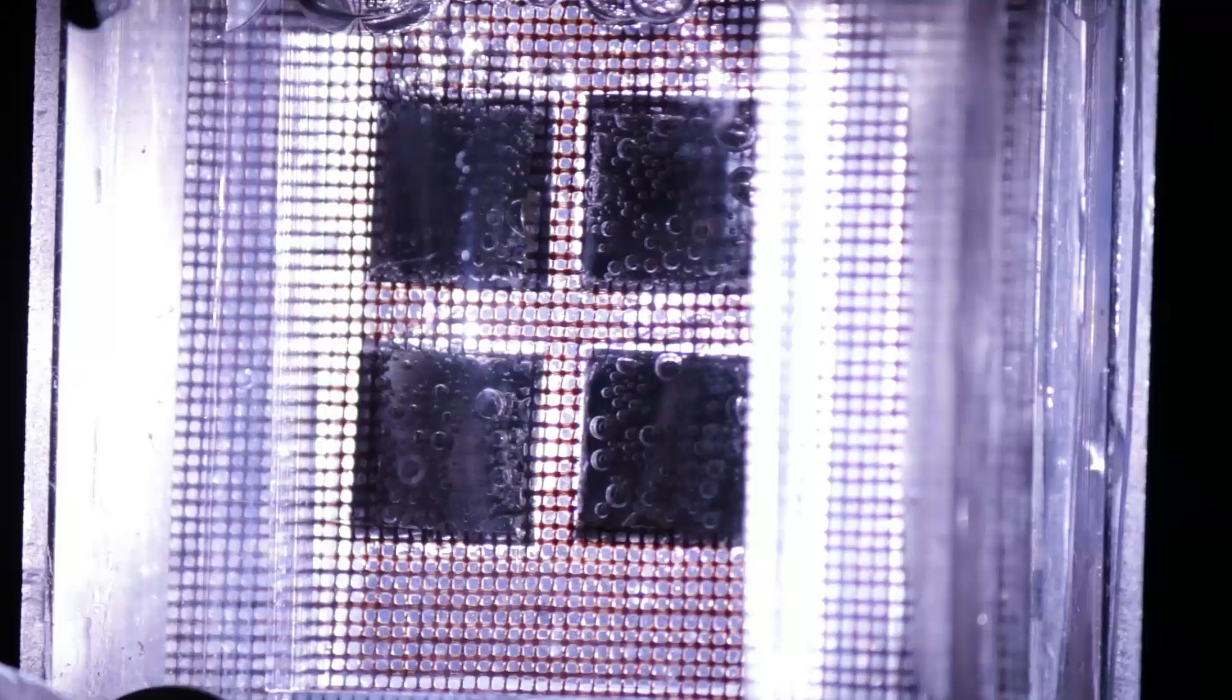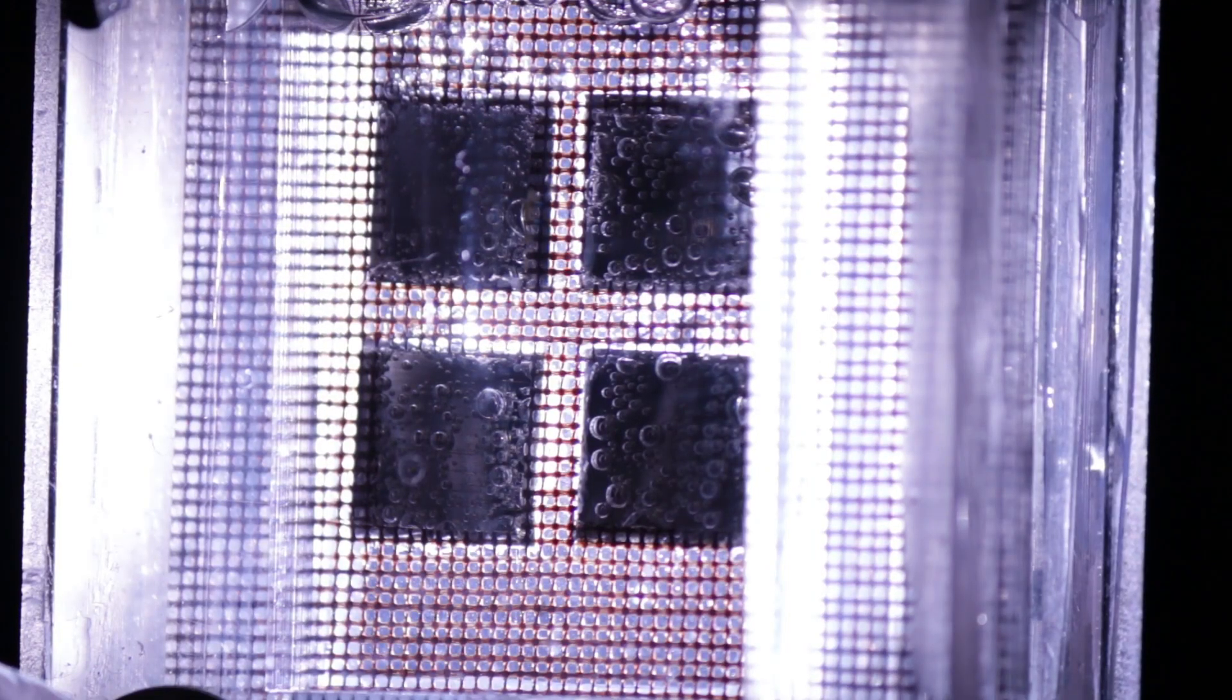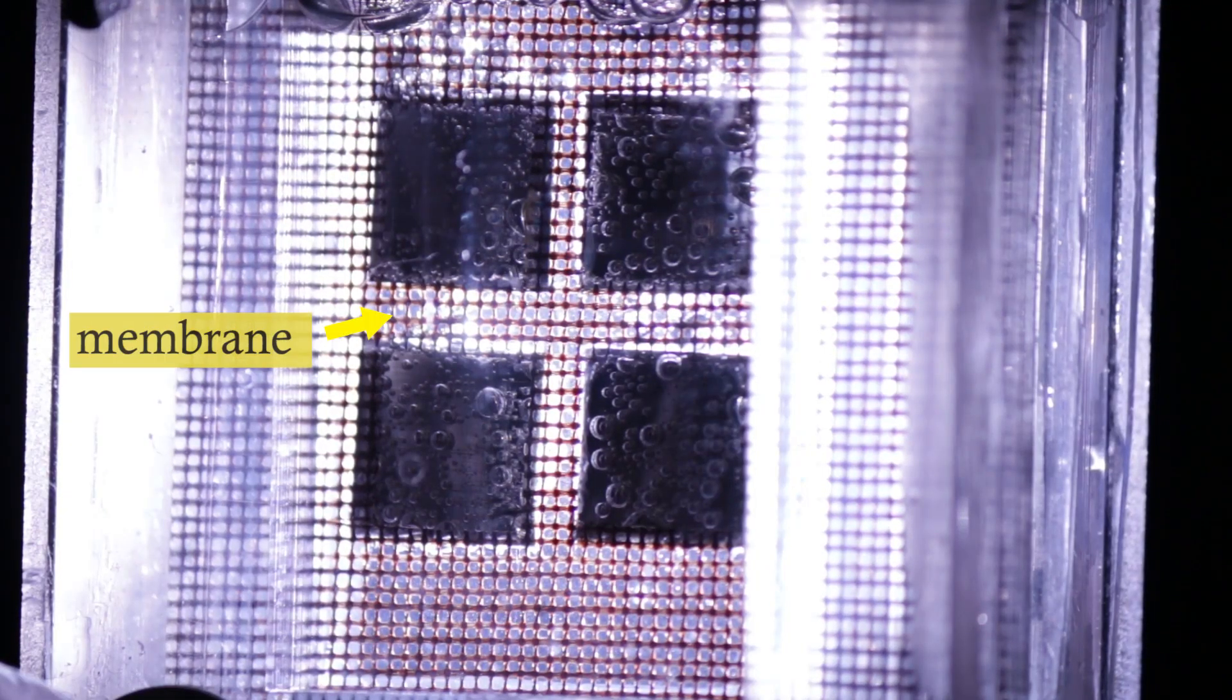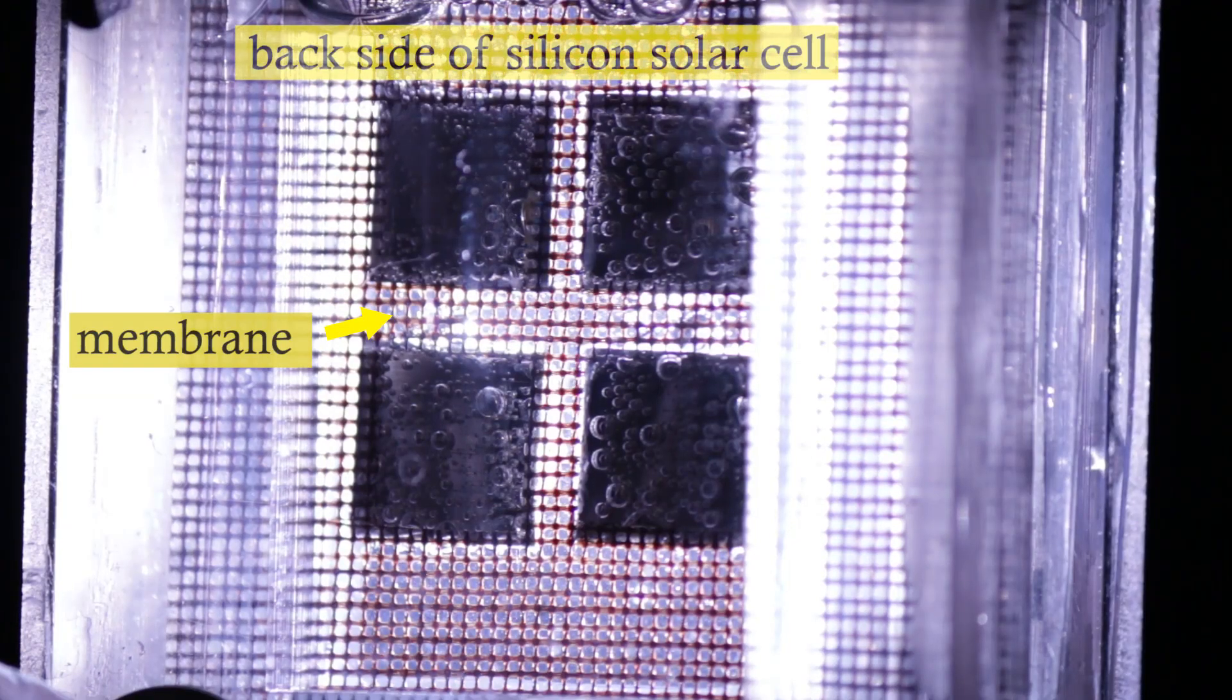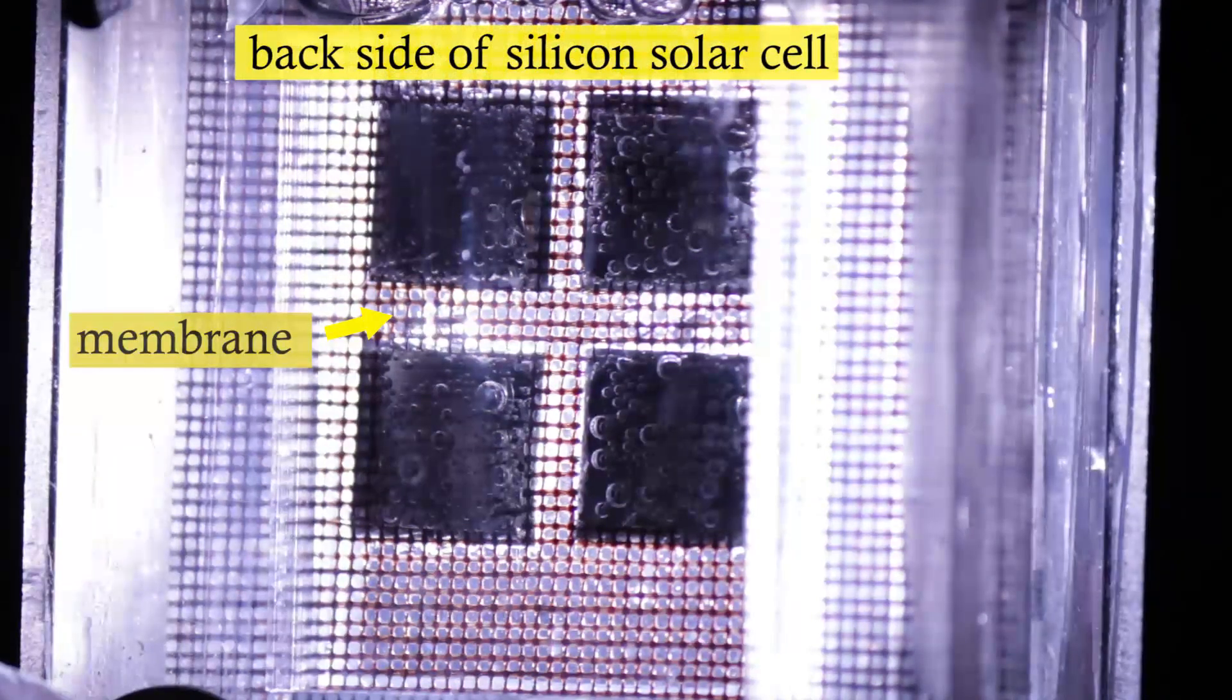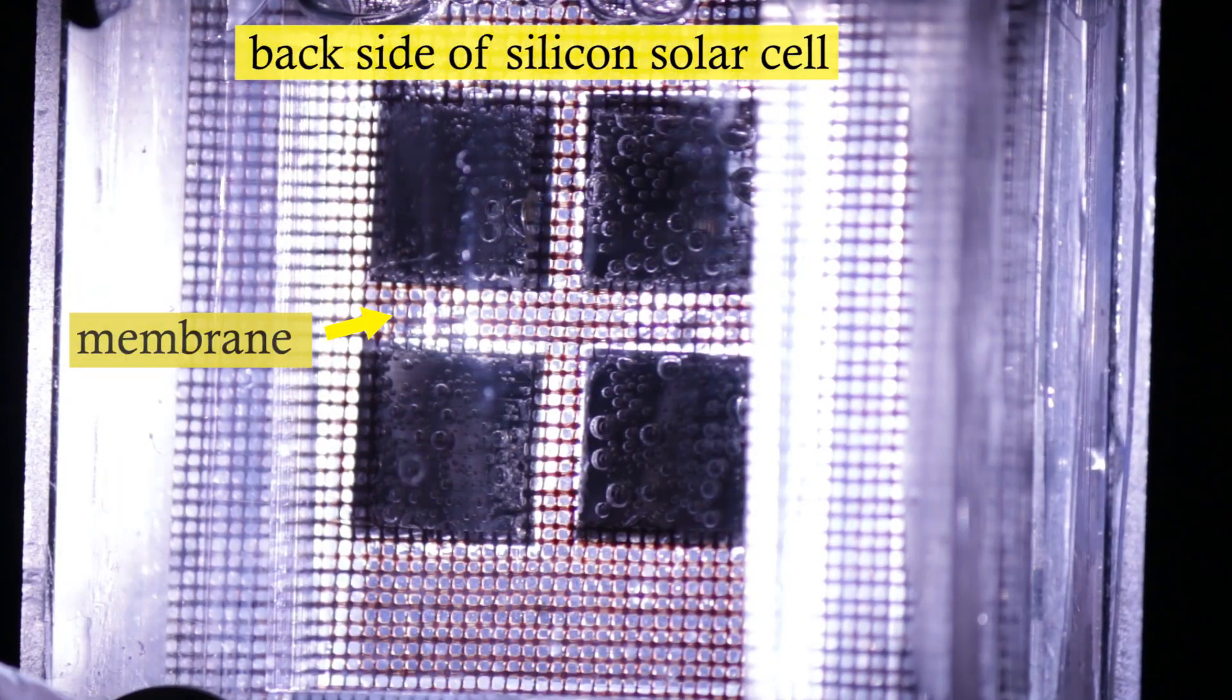Shown here is an assembly of solar cells integrated into a sheet of ion-selective membrane. The hydrogen evolution reactions take place on the backside of these silicon solar cells, forming large bubbles on and around the solar cells.